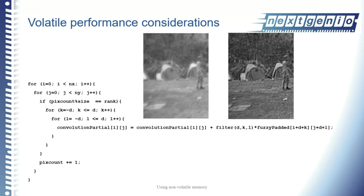So I can reduce the amount of DRAM I need while still computing the algorithm in the correct time. If I can structure my algorithm to bypass the issues of persisting and updating data, I can get really quite nice benefits from using non-volatile memory — although I'm not using the persistence functionality. If I do the reverse — put convolutional_partial on non-volatile memory and fuzzy_padded in volatile memory — I see the program go two or three times slower, but I do get the nice side effect that if my program crashes at any point, as long as I call persist at the right place, I can resume from the previous iteration that was persisted.